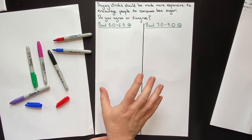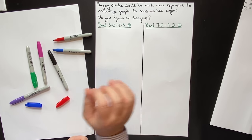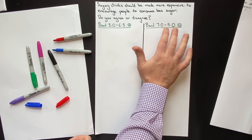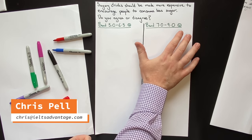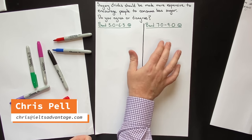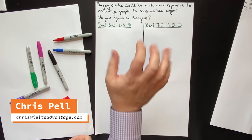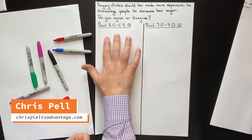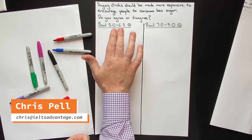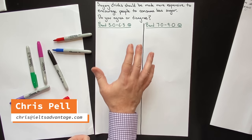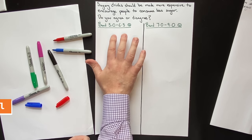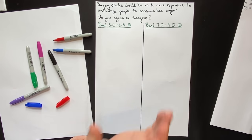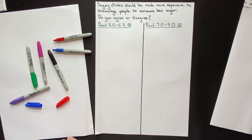A common question we get asked is: for IELTS Writing Task 2, what does a Band 7, Band 8, or Band 9 essay actually look like? Most of you are getting a Band 5, 5.5, 6, or 6.5, and you need a Band 7, 8, or 9 in IELTS Writing Task 2.